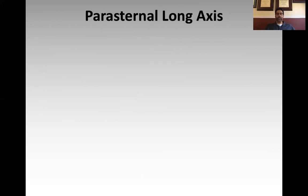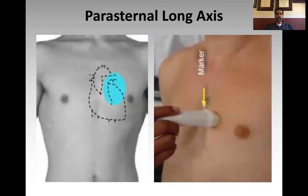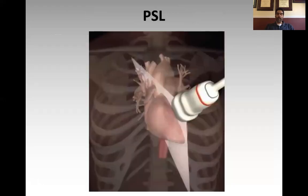The parasternal long axis view is a long axis view on the chest, up against the sternum. All imaging planes are relative to the axis of the heart. The heart sits obliquely in the chest — the long axis runs one direction and the short axis runs perpendicular to it. To get the parasternal long axis view, you align the probe so that the scan axis is parallel to the long axis of the heart. Put the probe just lateral to the sternum on the chest — along the nipple line is a good starting point — and direct the indicator to the right shoulder.